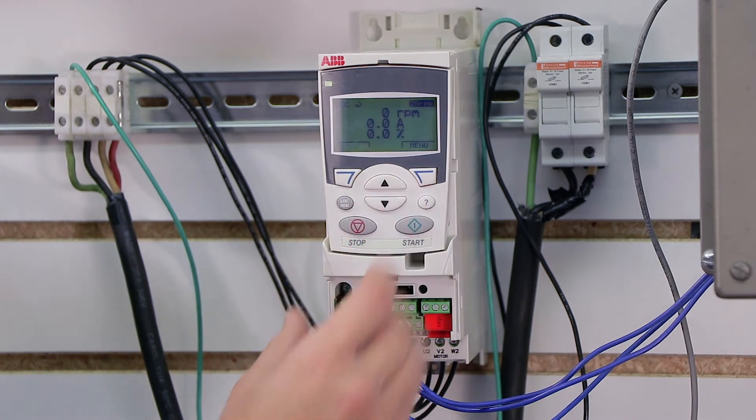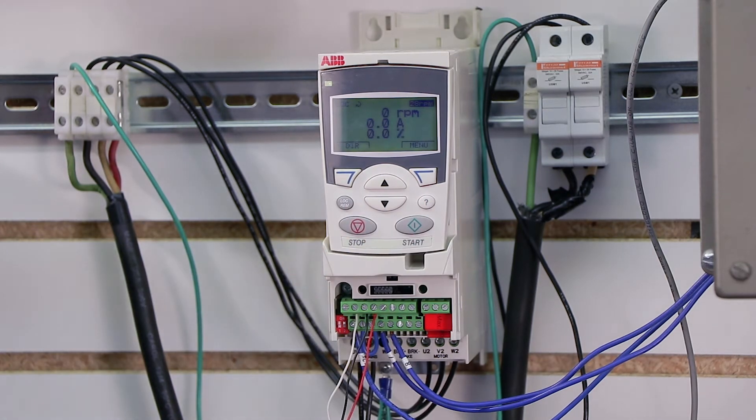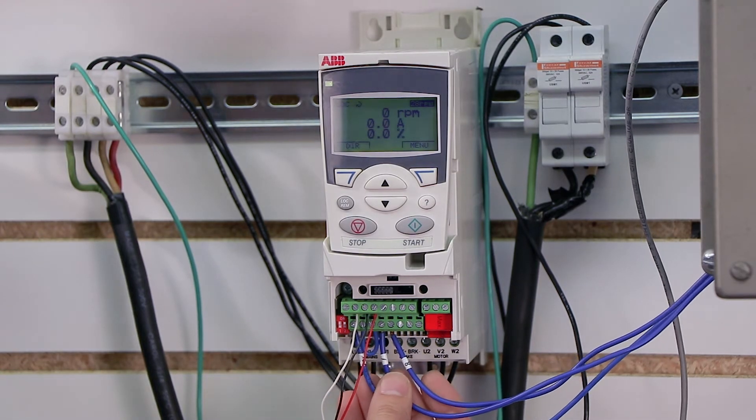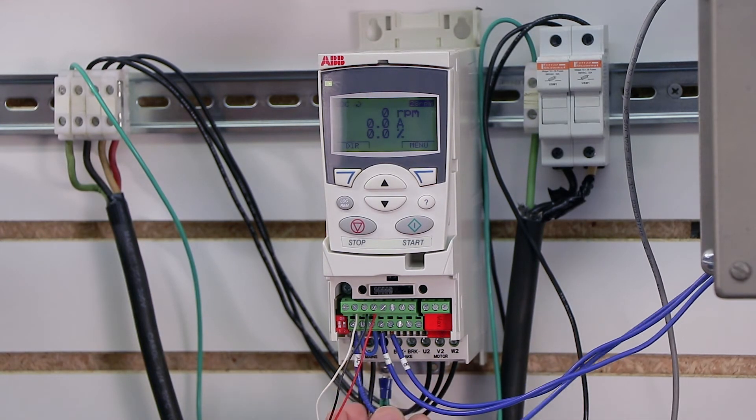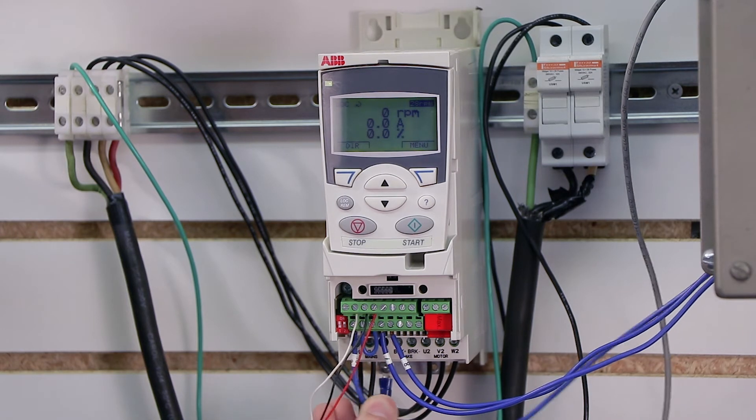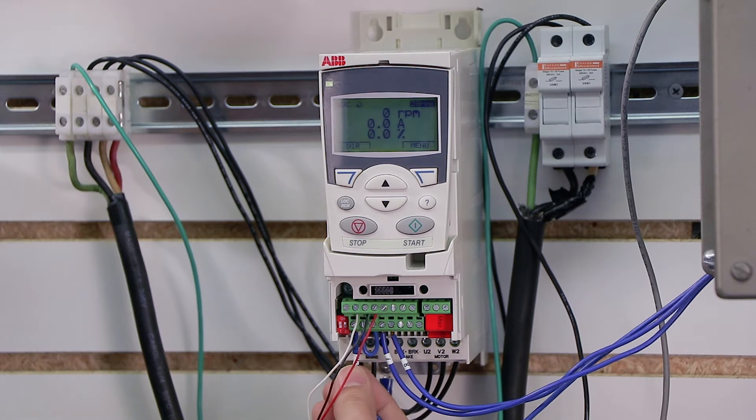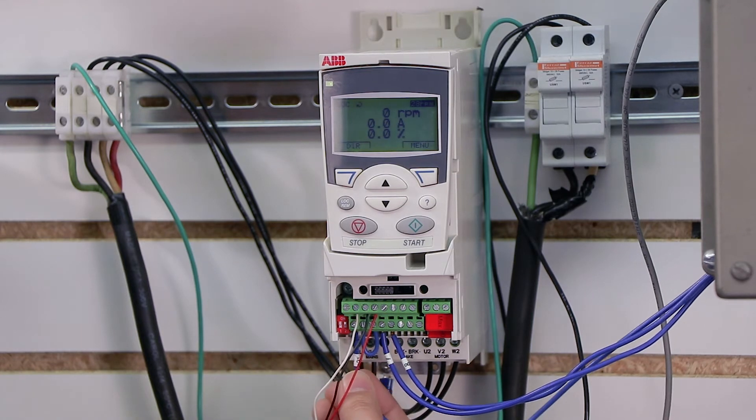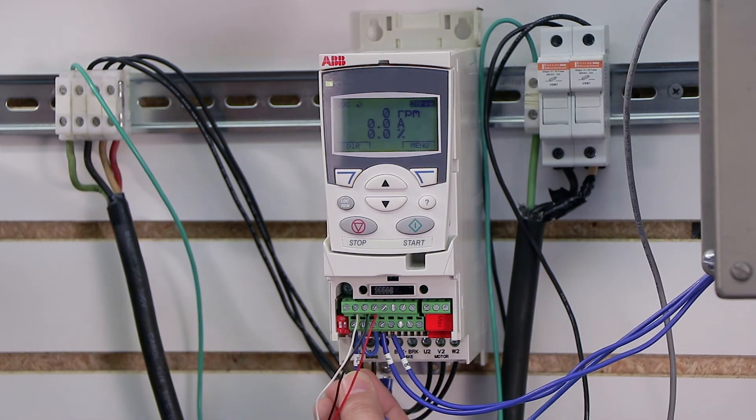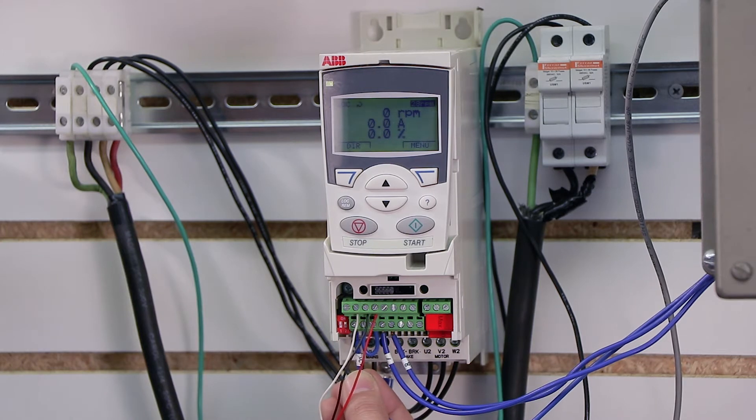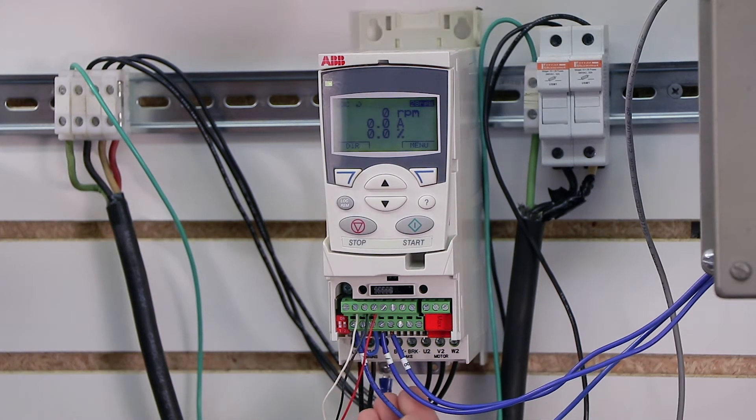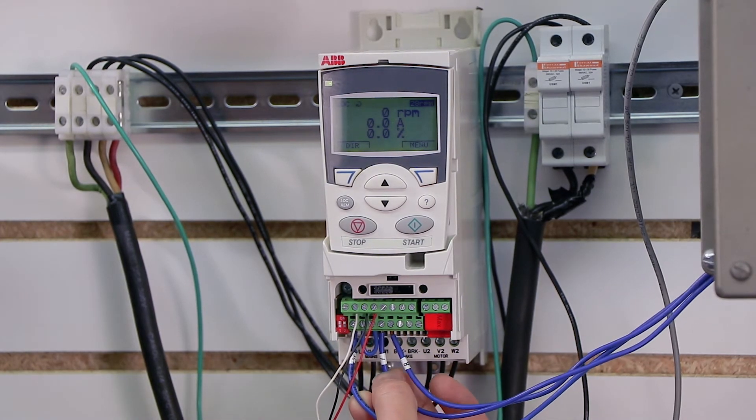Now that we've actually changed our application macro, now we can actually go in and do our wiring. Now according to our print, our common of our push buttons, in other words the supply voltage of our push buttons, we're going to come from terminal 9, and this is going to come into one side of our start button.